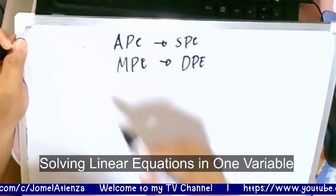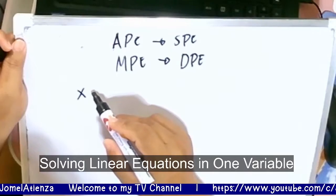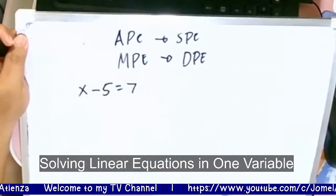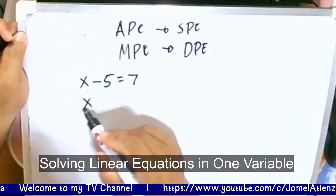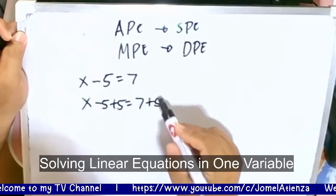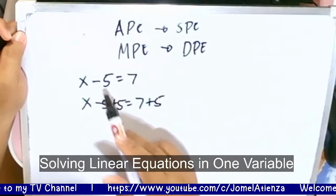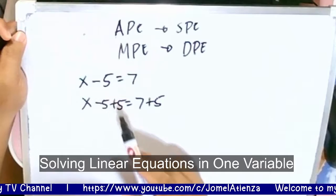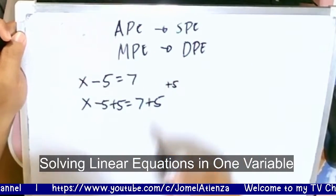Now let us have an equation. Let's say we have x minus 5 is equal to 7. So therefore, we have x minus 5 plus 5 is equal to 7 plus 5. Why? Because to eliminate the negative 5 or minus 5, we add both sides by 5.